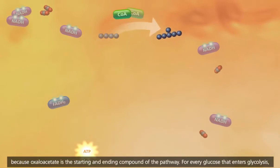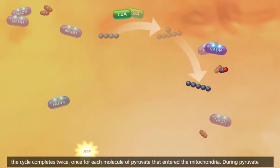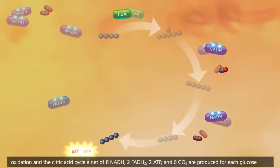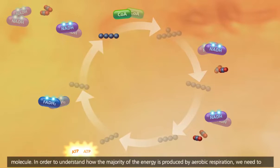For every glucose that enters glycolysis, the cycle completes twice, once for each molecule of pyruvate that entered the mitochondria. During pyruvate oxidation and the citric acid cycle, a net of 8 NADH, 2 FADH2, 2 ATP, and 6 CO2 are produced for each glucose molecule.